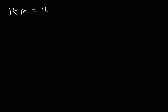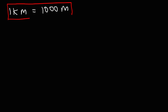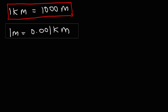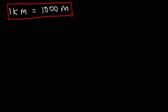You need to know that one kilometer is equal to a thousand meters — this is the conversion factor. If you divide both sides by a thousand, you get that one meter is equal to 0.001 kilometers, though that conversion factor is less common.